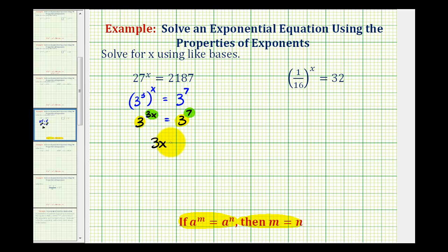And this will allow us to solve for x. If 3x equals 7, we'll divide both sides by 3, and we have x equals 7 thirds.